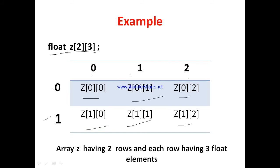But here now how many rows? 2 rows. Array z having 2 rows and each having how many columns? 3 columns. Each row having 3 columns. And what are the 3 columns? Which having the float elements. So here representation is array z having 2 rows and each row having 3 float elements.